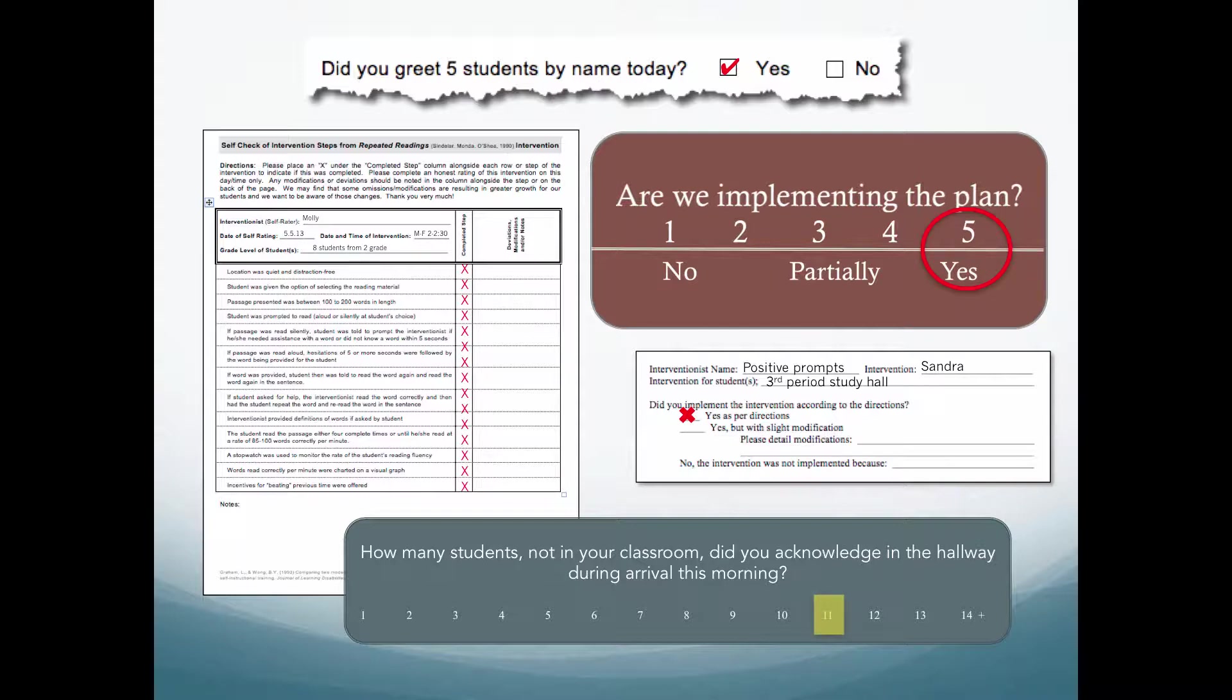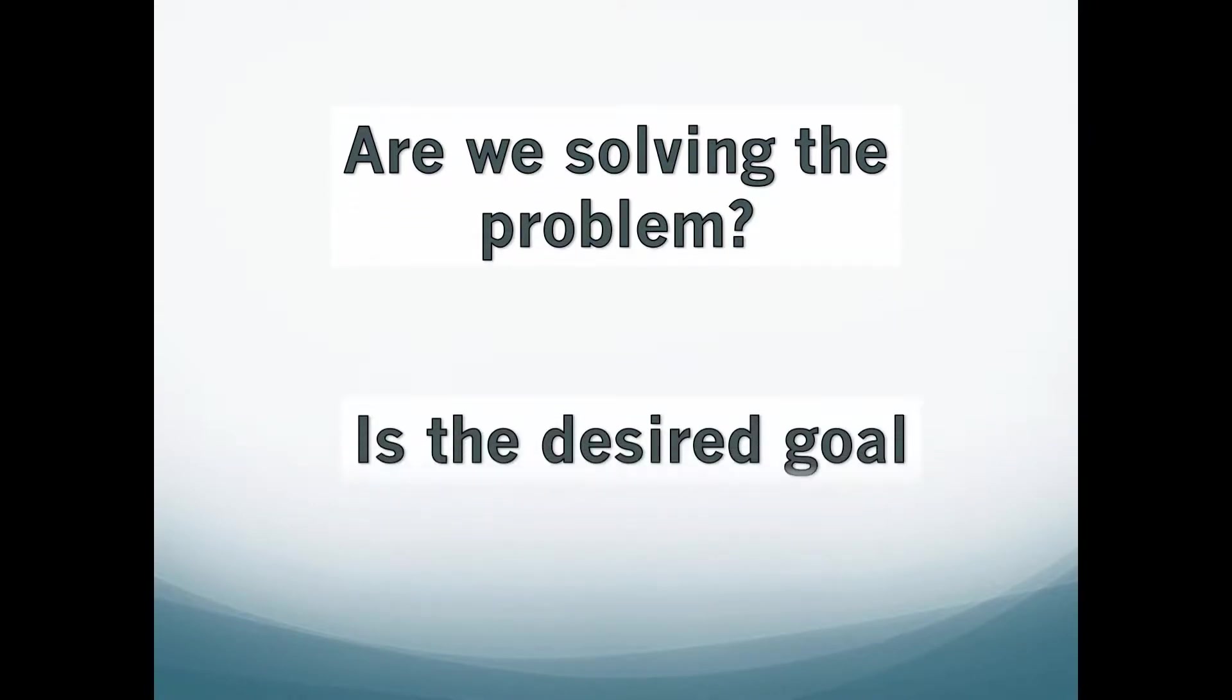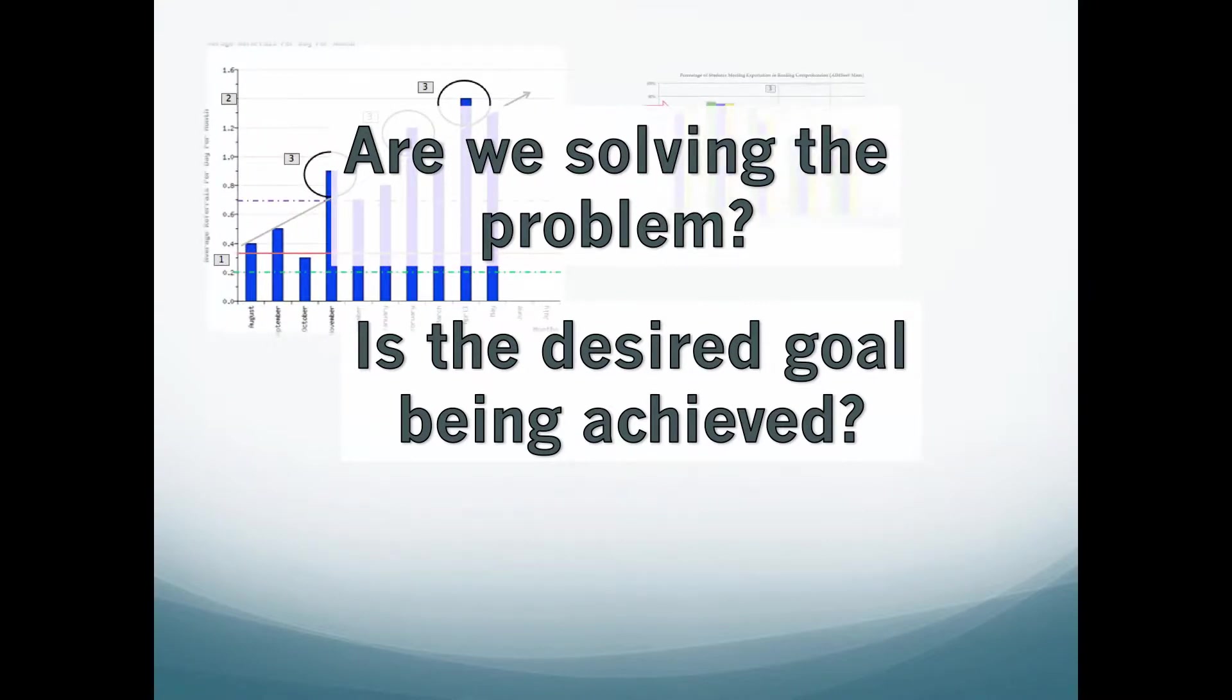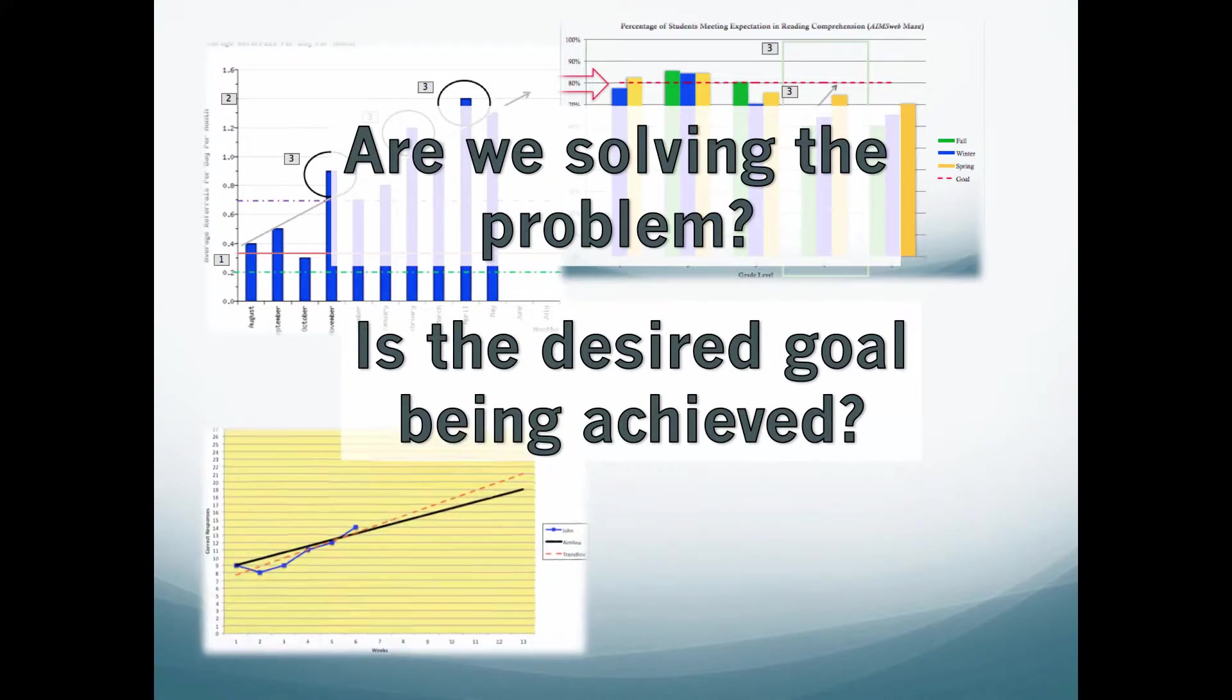Once integrity of implementation of solutions is supported, teams look more closely at the current levels of behavior to answer the questions: are we solving the problem? Is the desired goal being achieved? To answer these questions, teams will examine current patterns and trends of data and their relation to the goals previously established for success, or the point at which the team determined the problem will no longer be a problem.